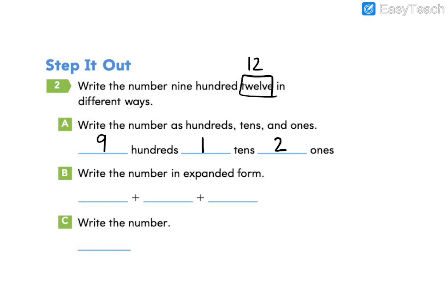Now we're going to write it in expanded form. Go ahead and write the value of each of these. The value of nine hundreds is equal to nine hundred. The value of one ten is ten. And the value of two ones is two. So we need to write the number 912.